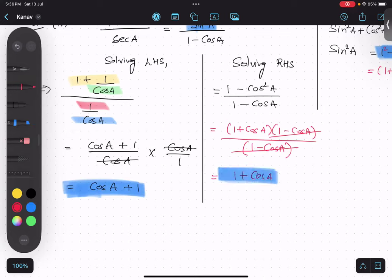So, LHS is equal to RHS. As LHS equals to RHS. Hence proved. Hence proved. Understood.